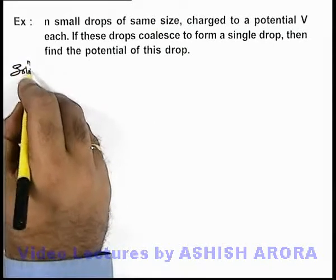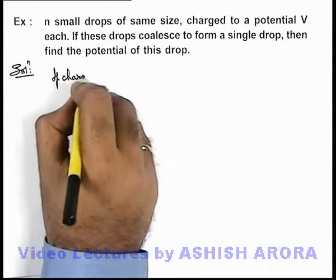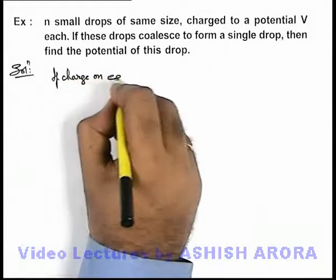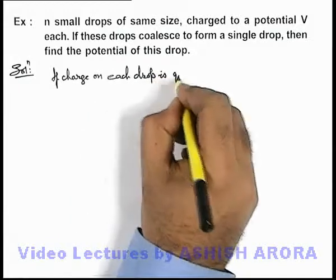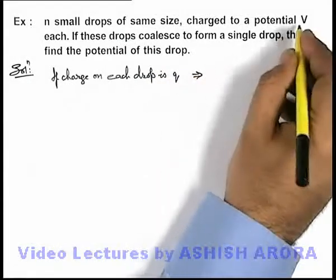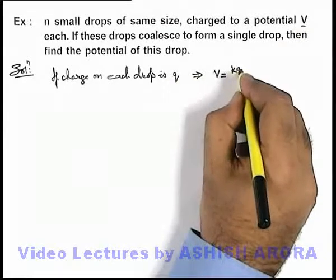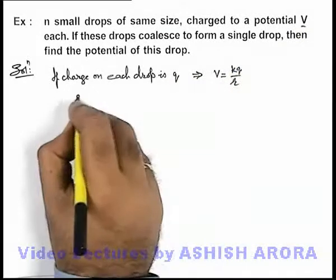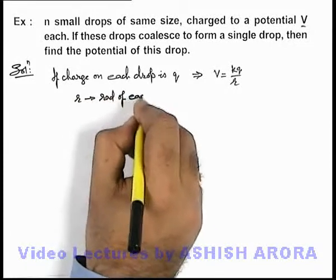In this situation, if charge on each drop is q, this implies the potential V is due to the charge q and can be written as kq/r, where r is the radius of each drop.